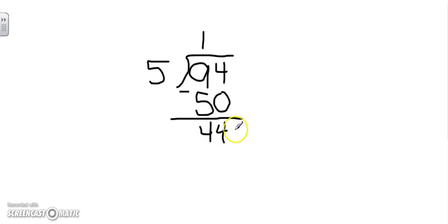And then I repeat. I have 44 ones to divide into 5 groups. 44 divided by 5 is 8. And then I multiply.